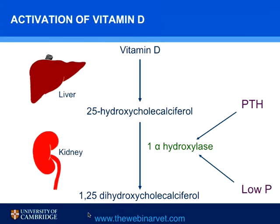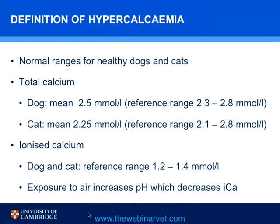Vitamin D3 is the available form of vitamin D in the diet and is converted in the liver to 25-hydroxycholecalciferol. This is further activated to 1,25-dihydroxycholecalciferol in the kidney.